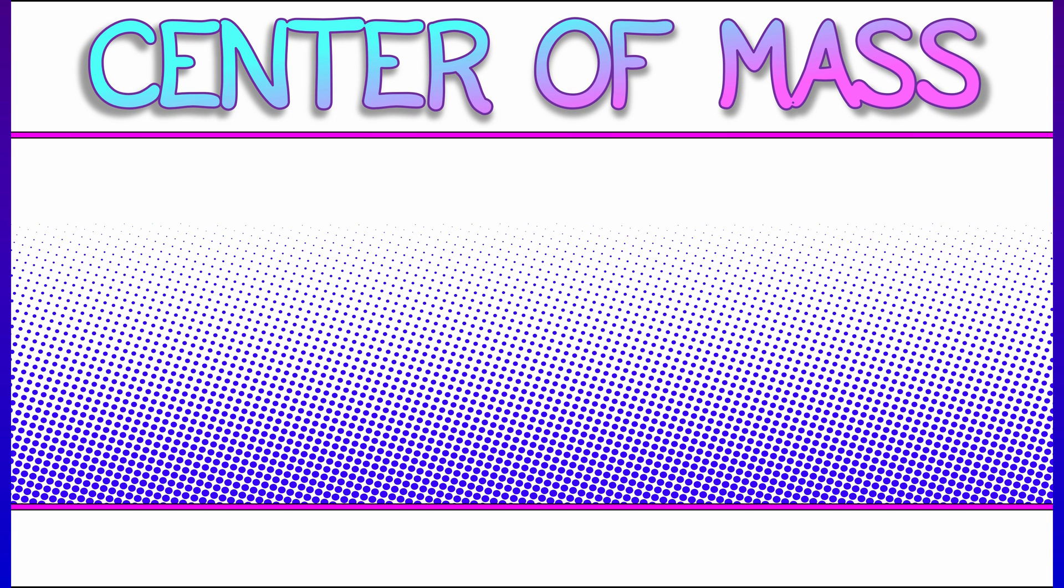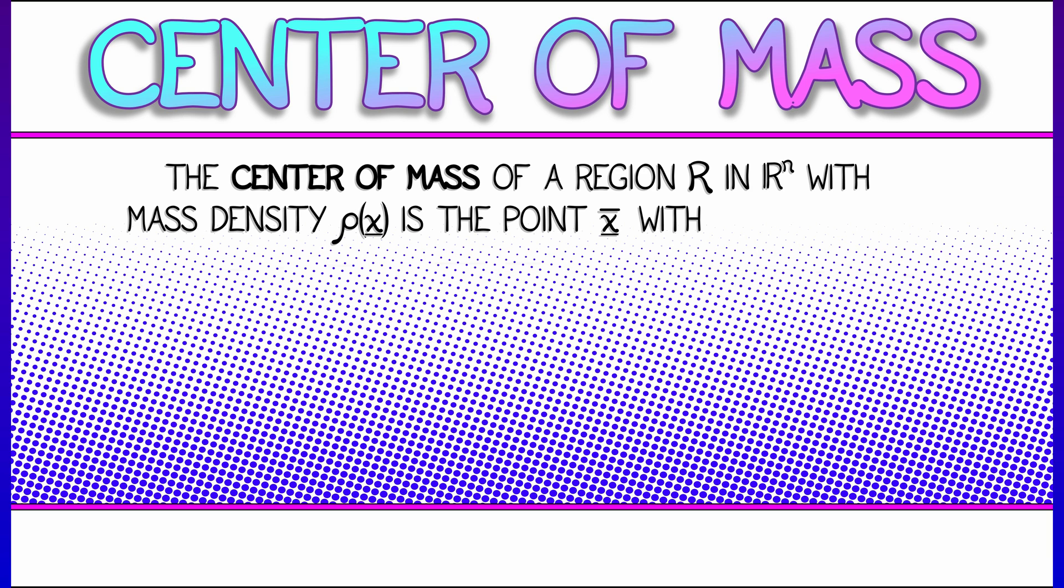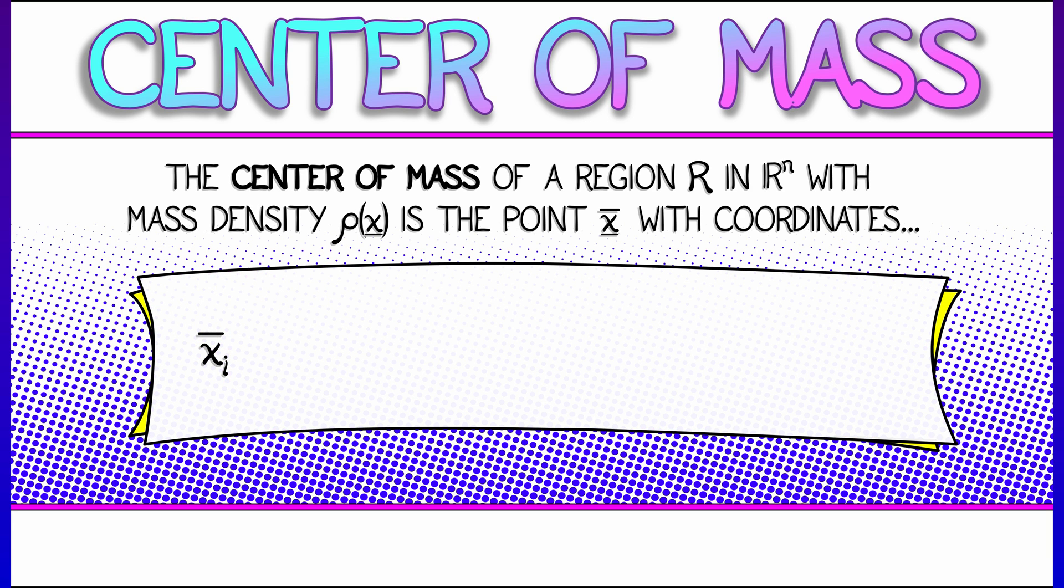The definition is straightforward. If you have a region R in R^n with mass density given by rho as a function of x, then the center of mass is a point x-bar whose i-th coordinate xi-bar is the integral of xi times rho of x dx divided by the integral of rho of x dx.